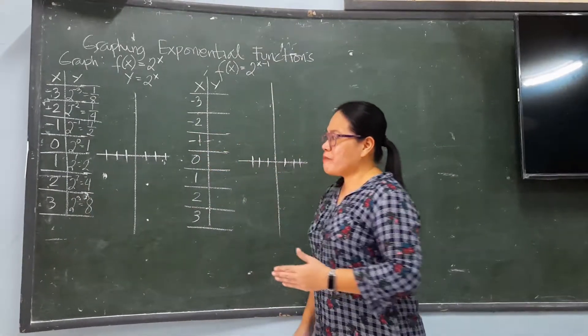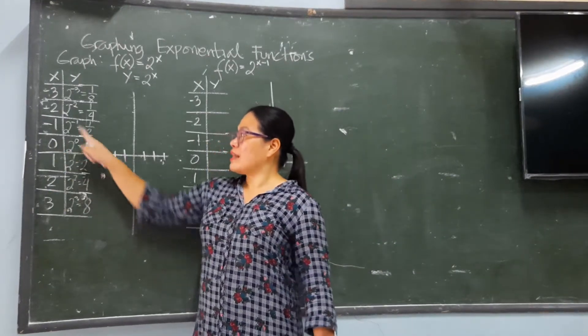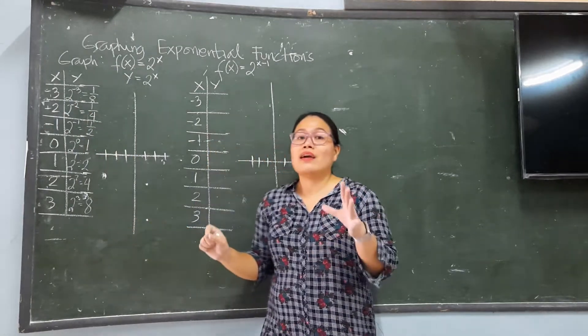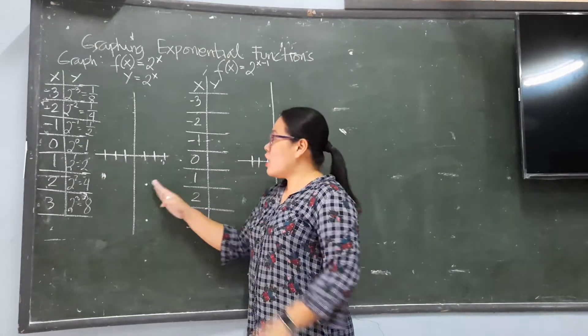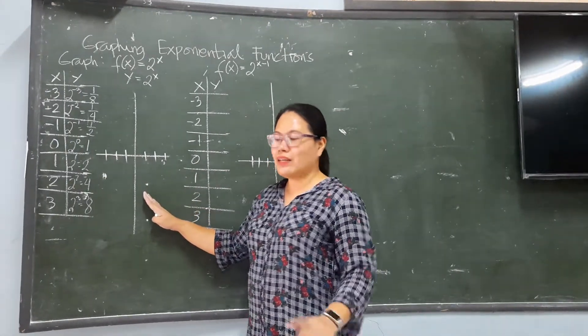Now, these two are your ordered pairs. These are your ordered pairs, and that is the way that you need. That is the one that we are going to plot on our Cartesian plane. Let us see.